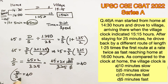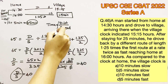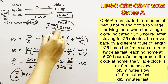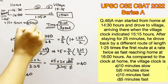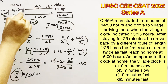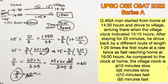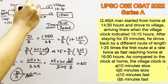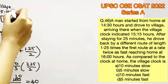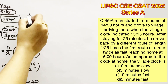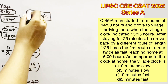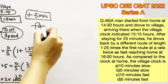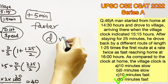D/S is distance divided by speed, which is the time taken. So the man took 40 minutes to travel from home to the village. Adding 40 minutes to 14:30 gives 15:10, but the village clock shows 15:15 — there is an extra 5 minutes being shown. Therefore the village clock is 5 minutes faster, making option D the correct answer.